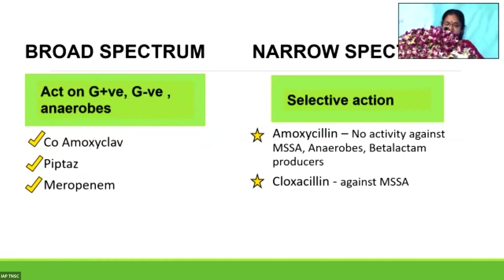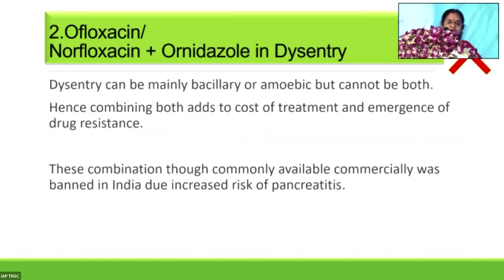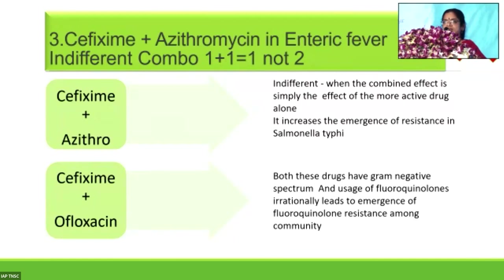What is a broad-spectrum antibiotic? Any drug that acts on gram-positive, gram-negative, and anaerobes is broad-spectrum. Classical examples are co-amoxiclav, pip-taz, and meropenem. When you don't know the organism and the child is very sick, you resort to broad-spectrum antibiotics. When you know the infection and the organism, resort to narrow-spectrum drugs like cloxacillin or amoxicillin. Why is ofloxacin plus ornidazole irrational? Dysentery can be bacillary or amoebic but cannot be both — combining both adds to cost, emergence of resistance, and risk of complications. Cefixime plus azithromycin in enteric fever is an indifferent combination: 1+1=1, not 2, since the combined effect is simply the effect of the more active drug alone, and it increases resistance.